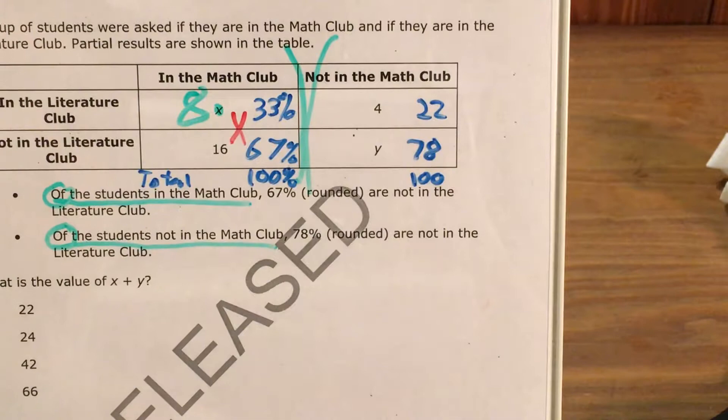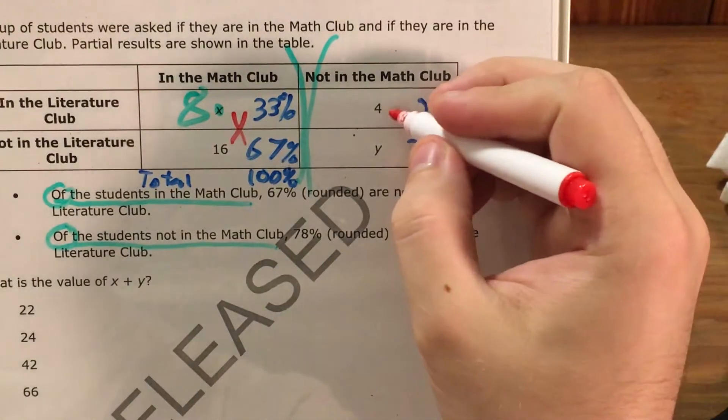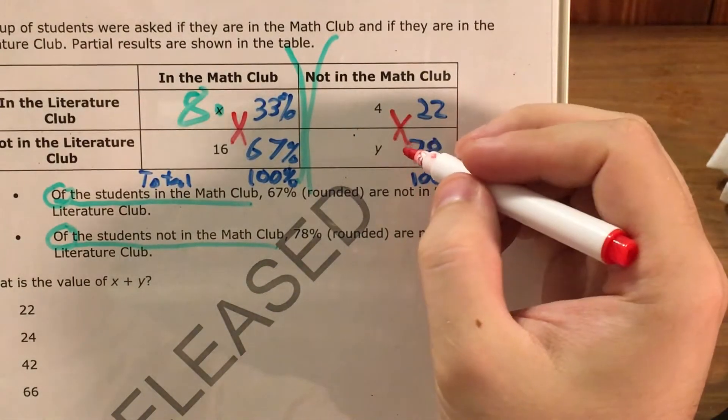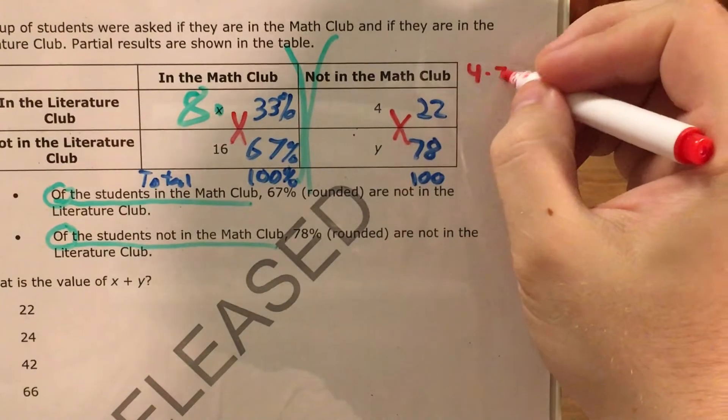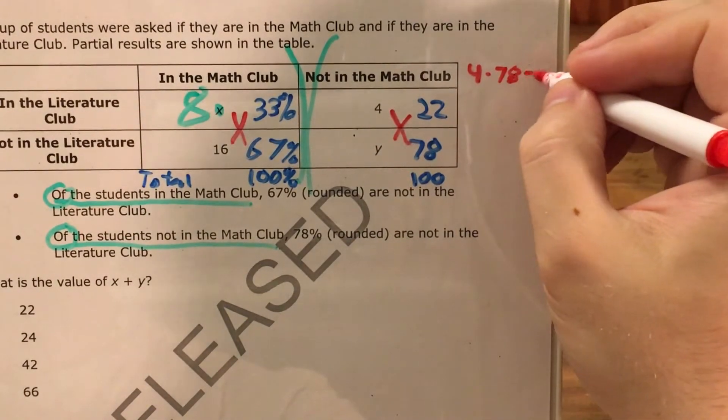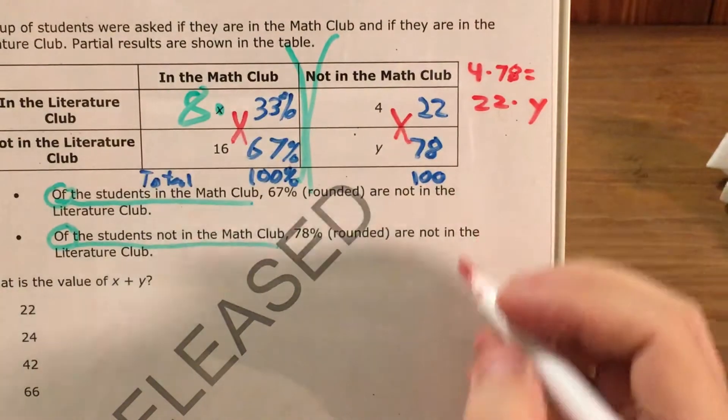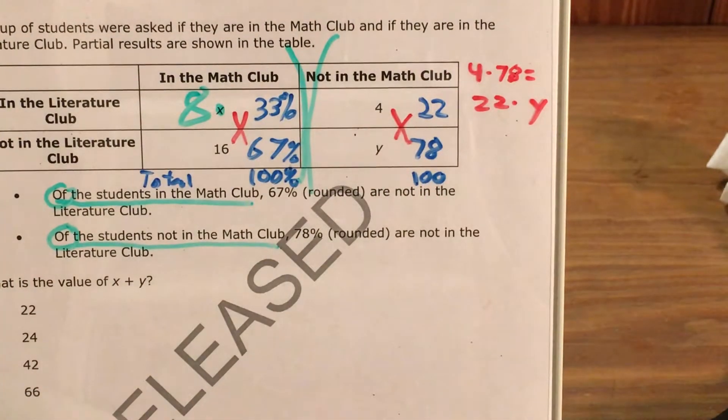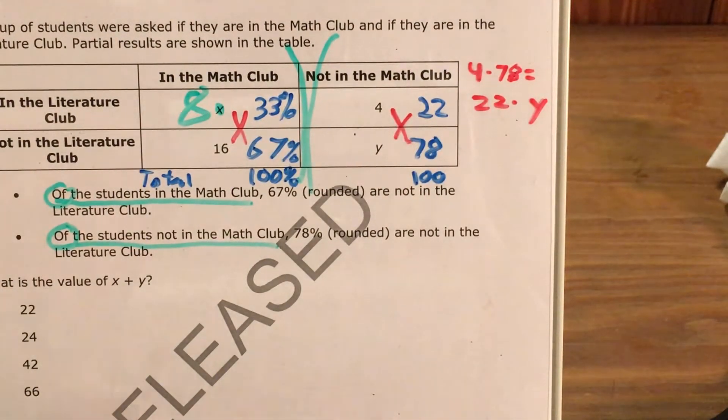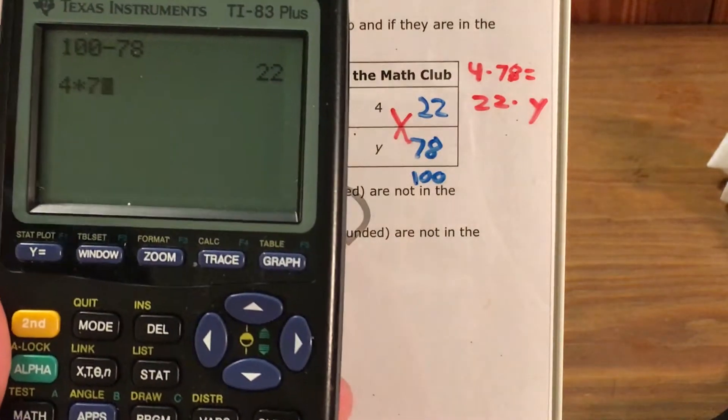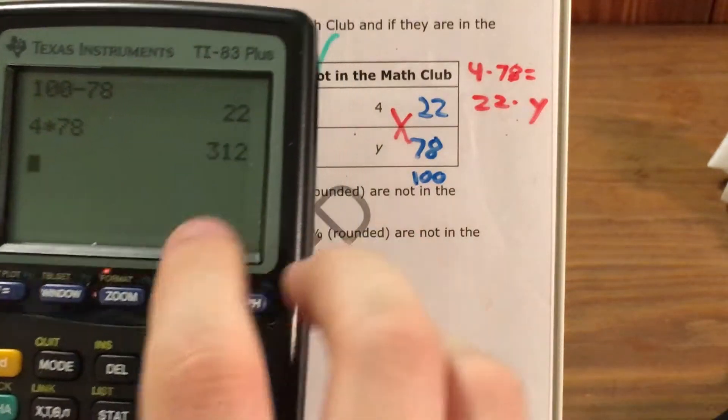I'm going to use cross-multiplying again. 4 times 78 equals 22 times y. 4 times 78 equals 22 times that number that I don't quite know what it is yet. So 4 times 78 equals 312.